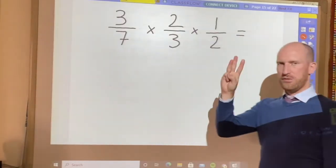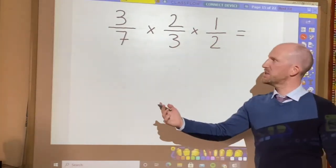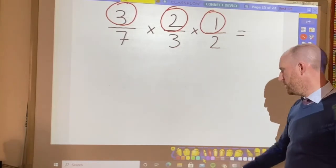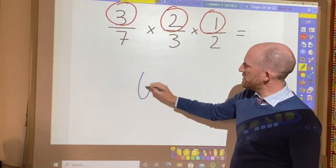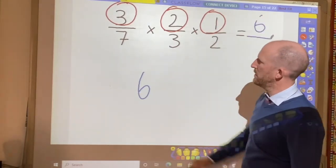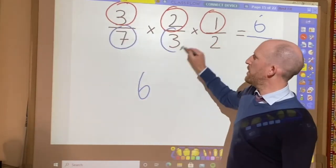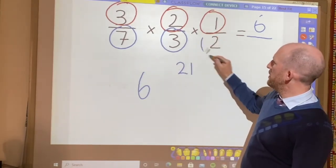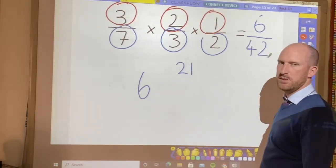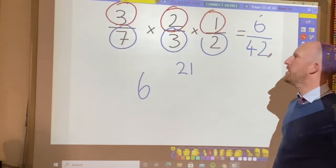What about if we have three fractions together? Okay? What happens then? Well, it's just the same. You multiply all the three numerators together. So, three multiplied by two is six. And then six multiplied by one is six. Then you multiply the numerators, the denominators, sorry, together. So, seven multiplied by three, twenty-one. Then multiply twenty-one by two, forty-two. And don't forget to ask the question, can I simplify my answer? Okay? I'm not going to be simplifying this one just now.